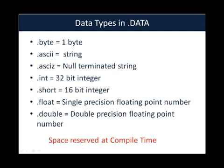The first is .byte, which is actually one byte. Then we have .ascii, which if you remember from the previous video is basically a string. Then we have .asciiz, which is nothing but the null terminated string. Then .int, which is a 32-bit integer. .short is a 16-bit integer. .float is single precision and .double is double precision floating point numbers.